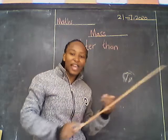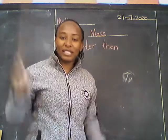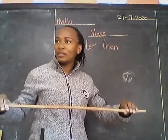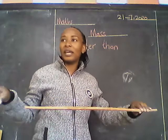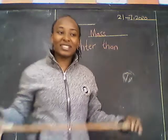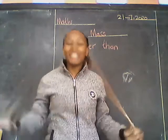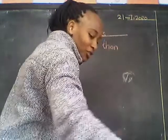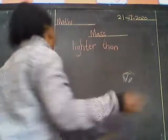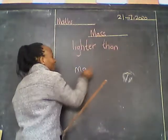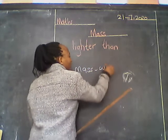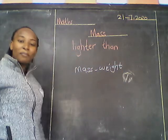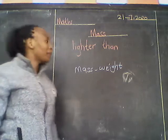In math we are using heavier than and now lighter than. But for length, we don't use heavier than — it's longer. Length is measurement. But now mass — it's the weight. Mass is weight. Don't forget, mass is the weight of something. But length is the measurement.